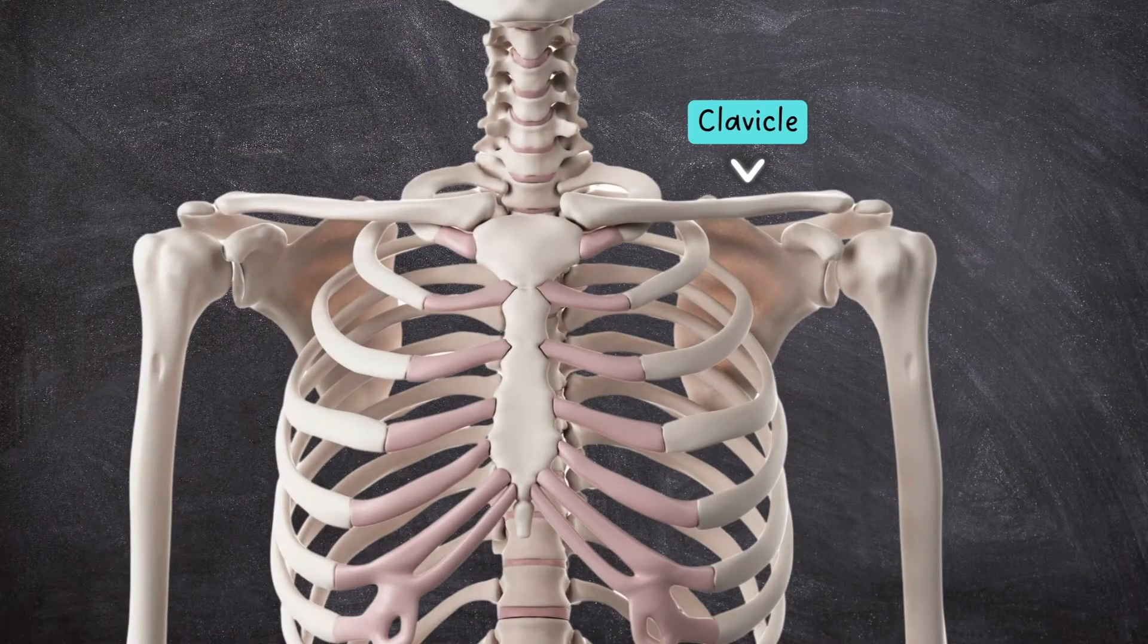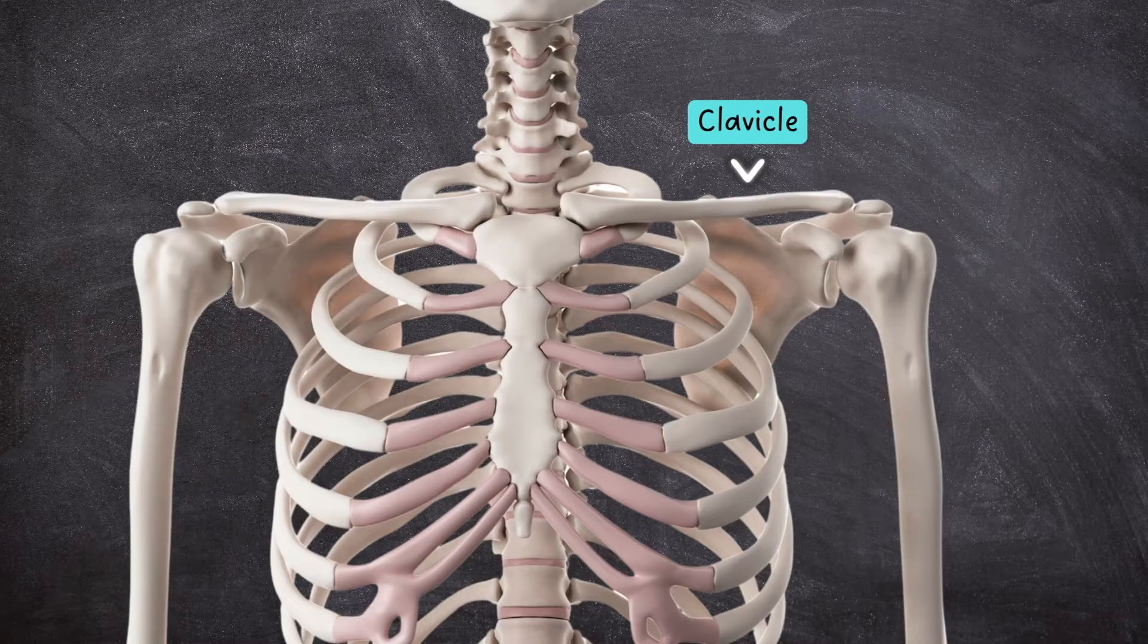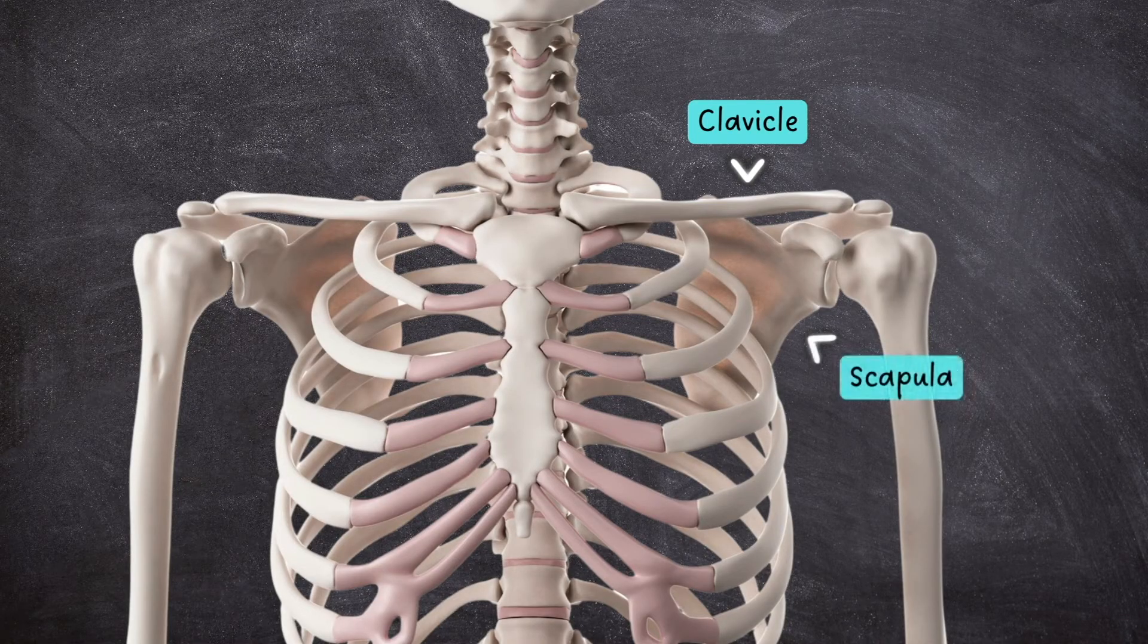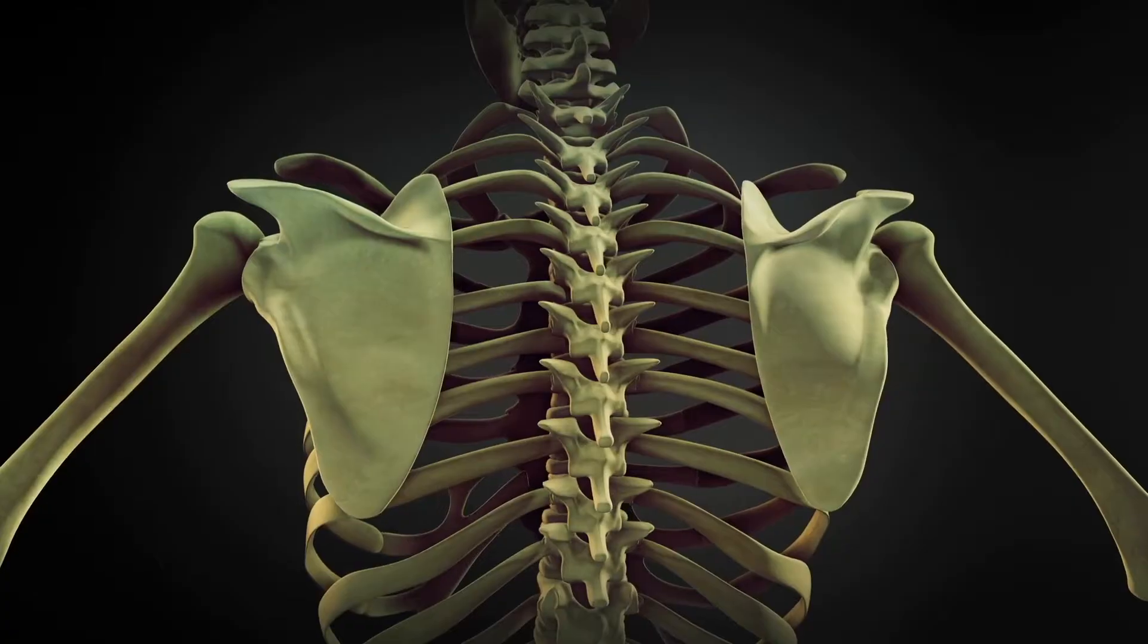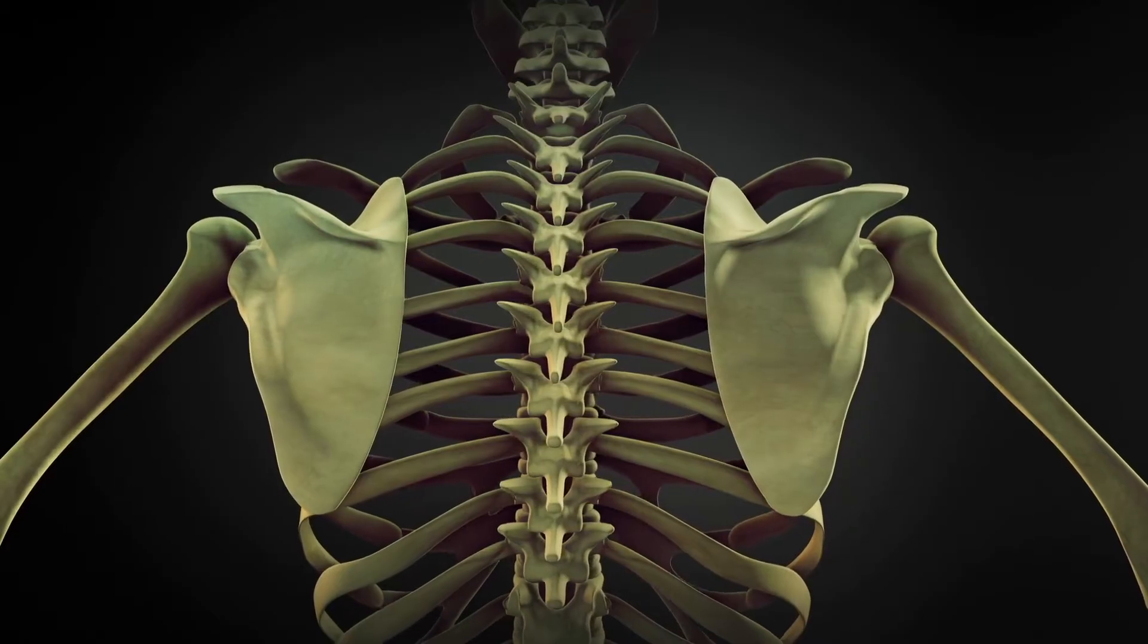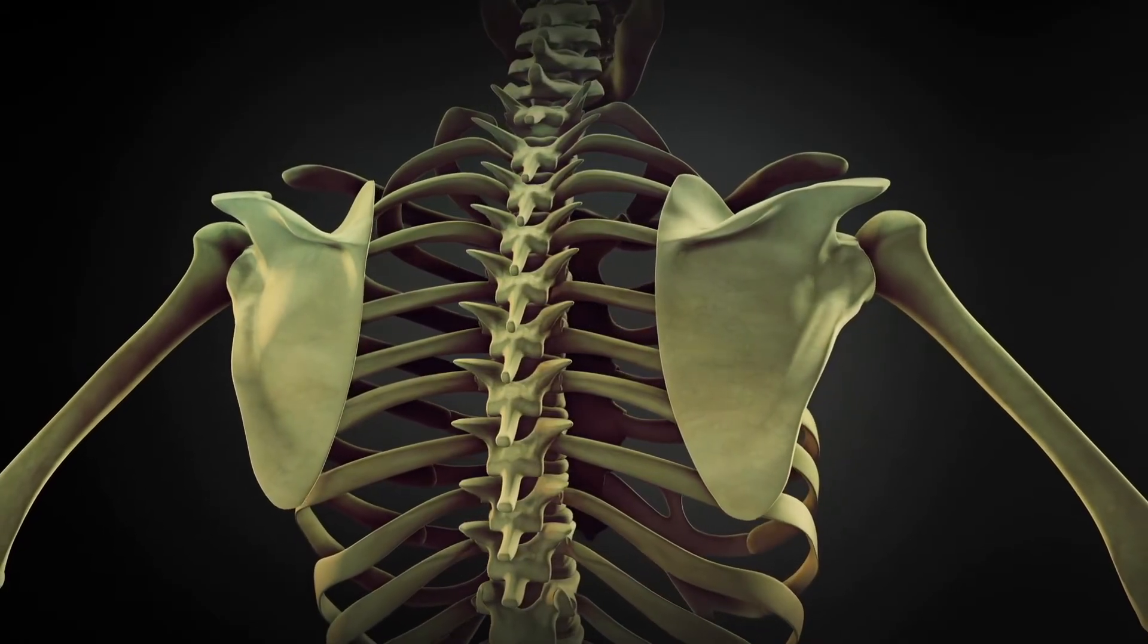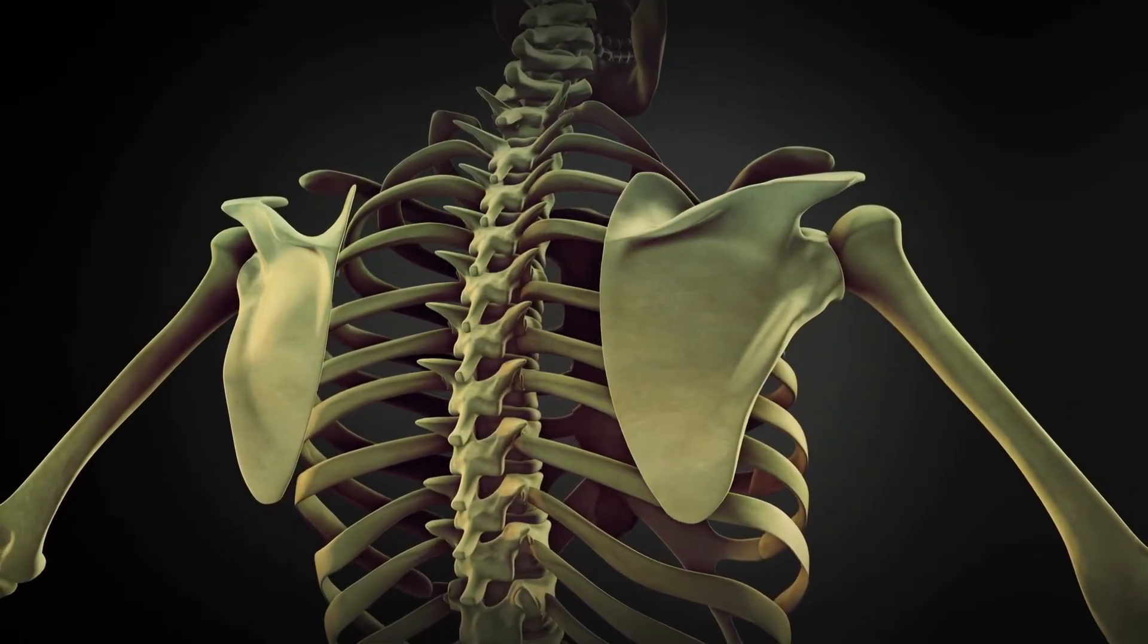The clavicle, or collar bone, is a long bone that connects the sternum to the shoulder joint. Here it articulates with the scapula, otherwise known as the shoulder blade, which is a broad, flat bone that provides the surface area necessary for muscles to attach, which both stabilize and produce a wide range of movements at the shoulder.